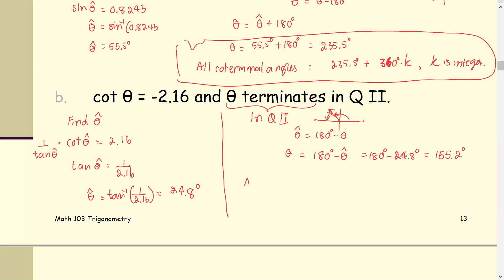For all co-terminal angles, the co-terminal angles are theta equals 155.2 degrees plus 360 degrees multiplied by k, where k is an integer.